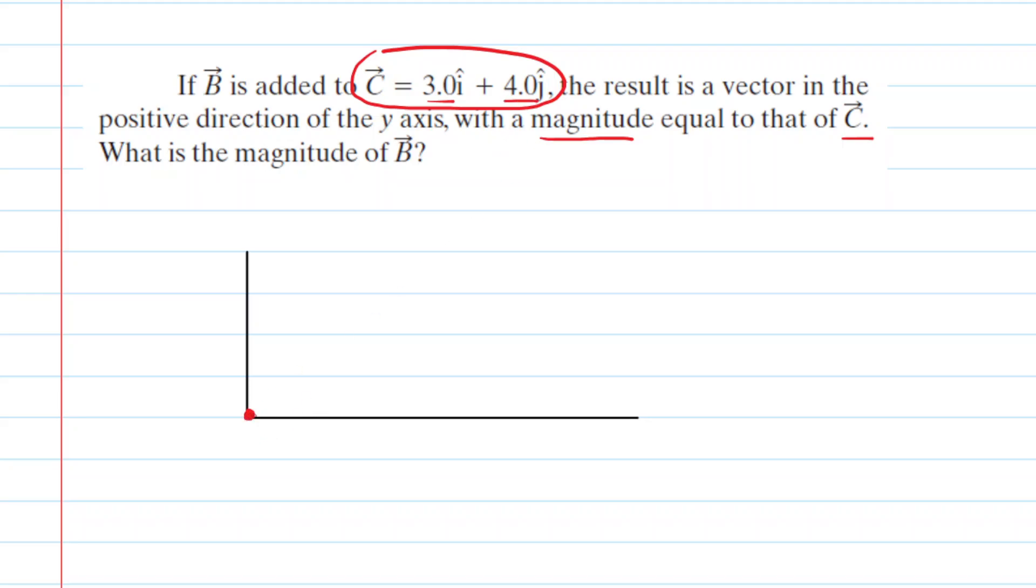So starting at the origin we would move along the x-axis a distance of positive 3 and then we would move up the positive y-axis a distance of 4. And then the magnitude of vector C is going to be this resultant vector right here. It basically forms the hypotenuse of a right triangle.